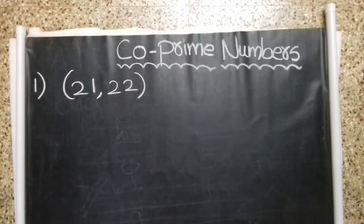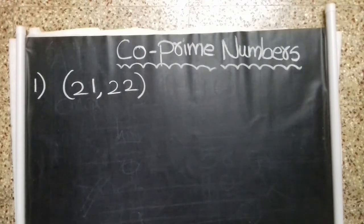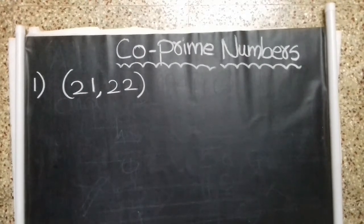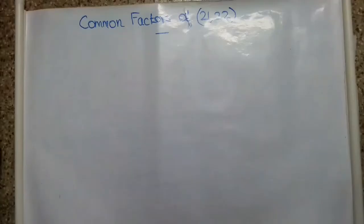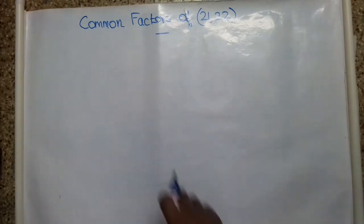Co-prime numbers definition. The first example is 21 and 22. According to the definition of co-prime numbers, first we can verify the common factors. In the numbers 21 and 22, we will find out the common factors.